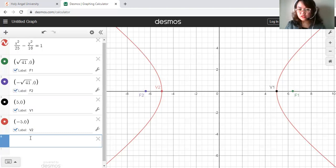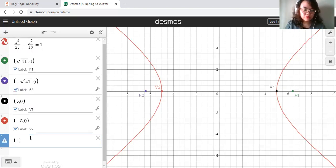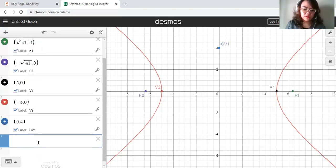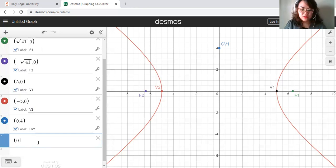Then co-vertices would determine how wide your branches of the hyperbola are. Square root of 16 is 4. So we have 0, 4, and that is CV1. And then another is 0, negative 4, and that is CV2.